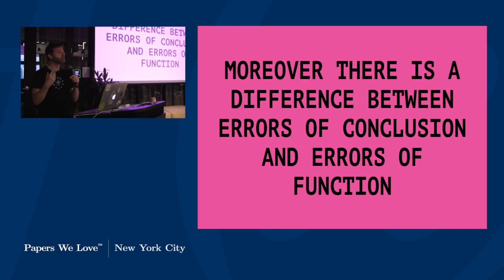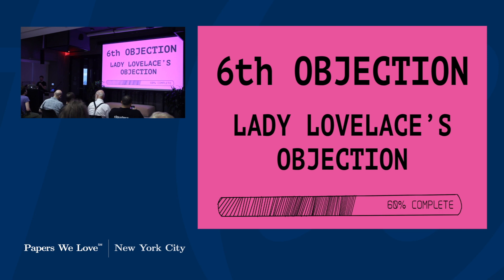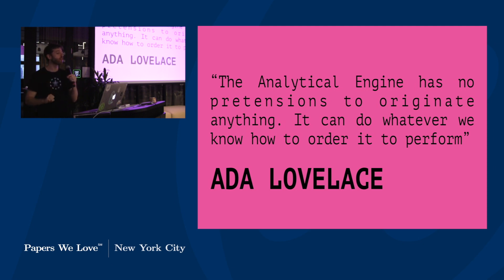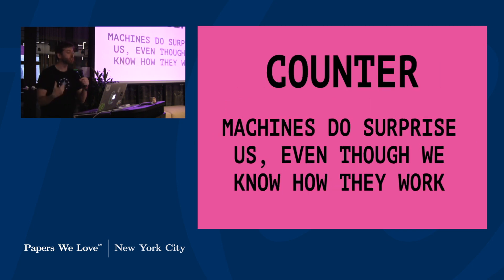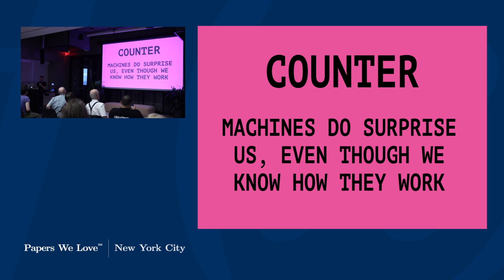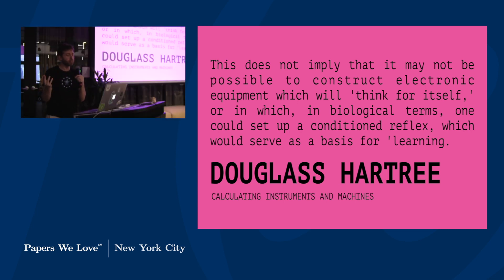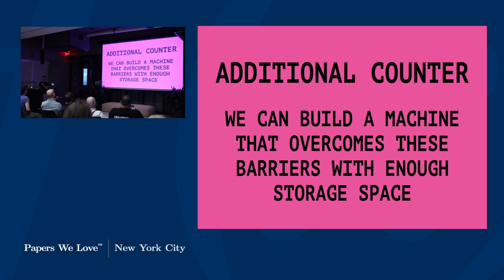His counter again is that we can build a machine that overcomes these barriers with enough storage space, and moreover there is a difference between errors of conclusion and errors of function — machines will eventually make mistakes in his opinion. This leads right to his sixth objection, the Lady Lovelace objection, where she says: 'The analytical engine has no pretension to originate anything. It can do whatever we know how to order it to perform.' He paraphrases this as machines can't surprise us. But his counter is that they do surprise us every single day, and we now see this is true with machine learning.